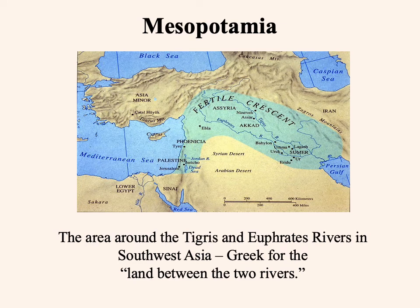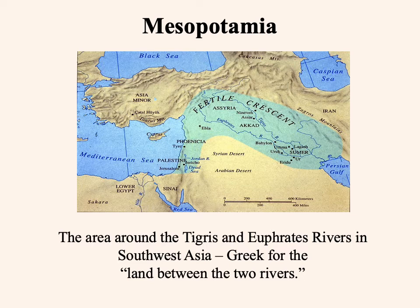Now let's look at some of the earliest civilizations we know about, starting with Mesopotamia, roughly corresponding to the center of what we call the Middle East today. The term Mesopotamia is actually Greek for 'land between the two rivers,' corresponding to the territory surrounding the Tigris and Euphrates rivers in southwest Asia — pretty much modern-day Iraq. This was part of a larger area known as the Fertile Crescent, which ran up along these two rivers and curved down into the eastern Mediterranean coast.